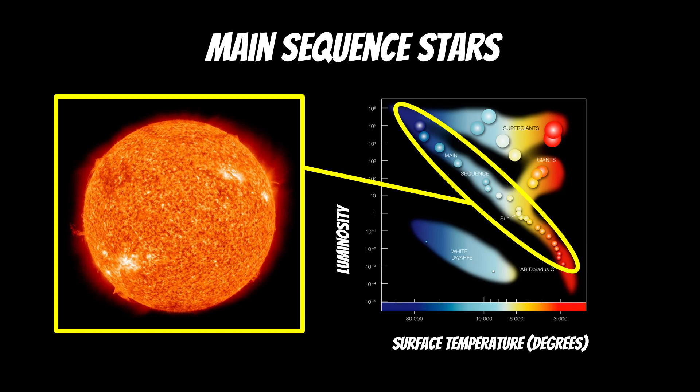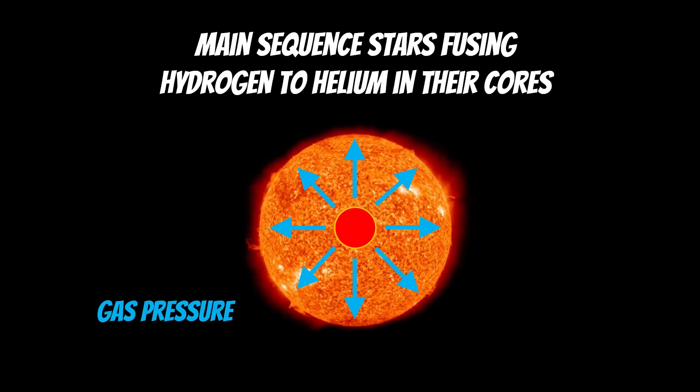Now on the main sequence, they are fusing hydrogen into helium in their cores. So this is the main part of the star's life. It sits there for the majority of its life actually, fusing hydrogen into helium in their core.